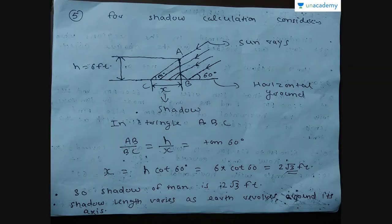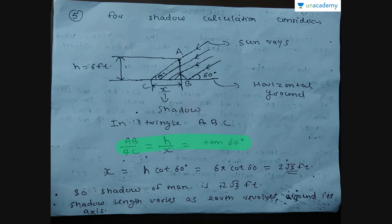Now for the shadow calculation: the sun rays make an angle of 60 degrees at 10 am with the horizontal. The man is standing with a height of 6 feet. Consider triangle ABC where angle BAC equals 60 degrees and X is the length of the shadow. In this triangle, AB/BC = H/X = tan(60°). Therefore, X = H × cot(60°) = 6 × cot(60°) = 2√3 feet. So the shadow of the man is 2√3 feet.